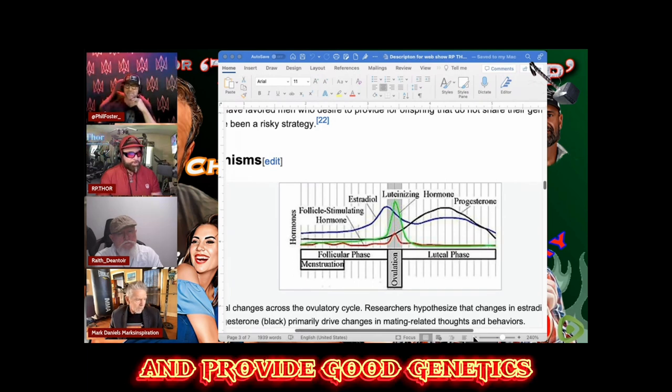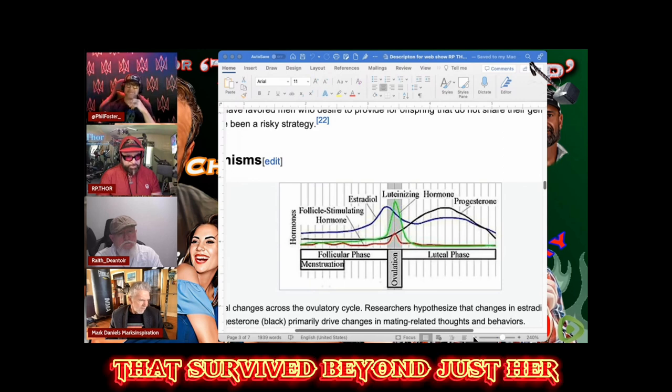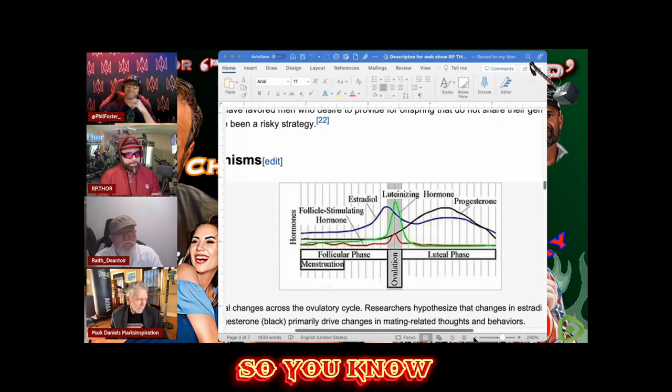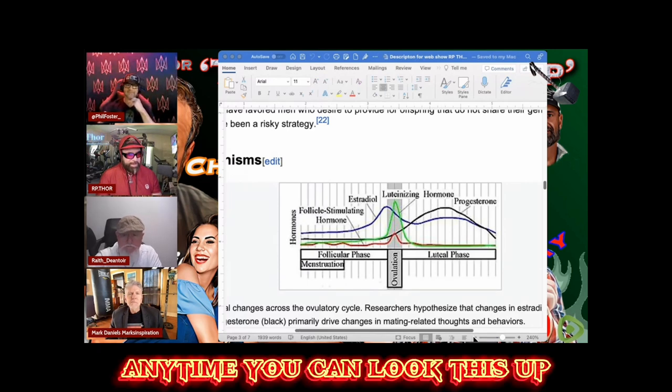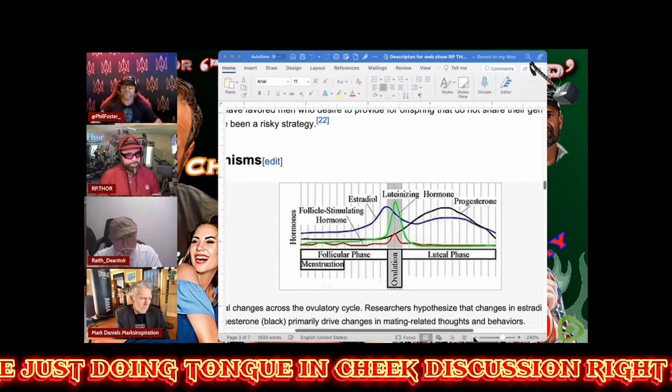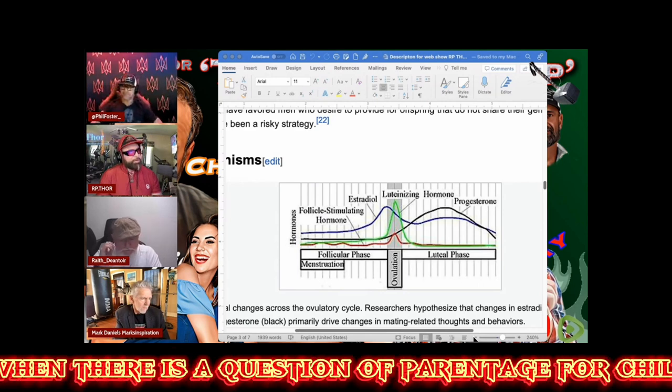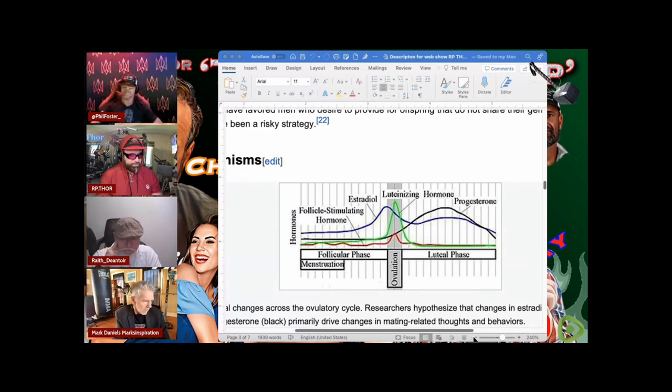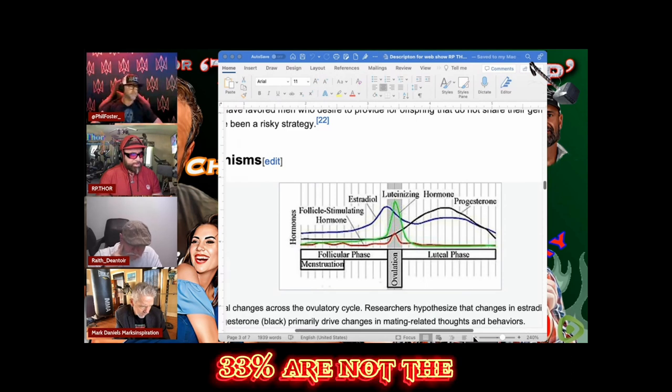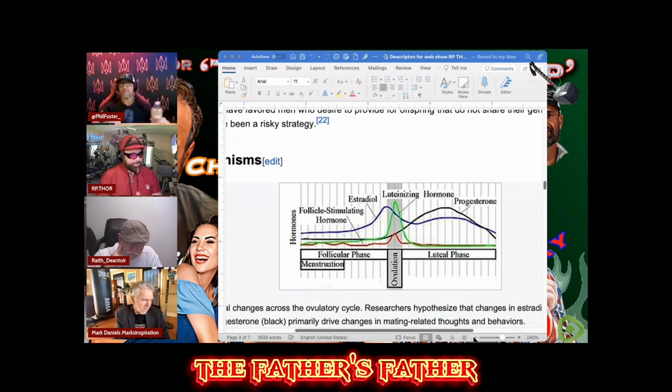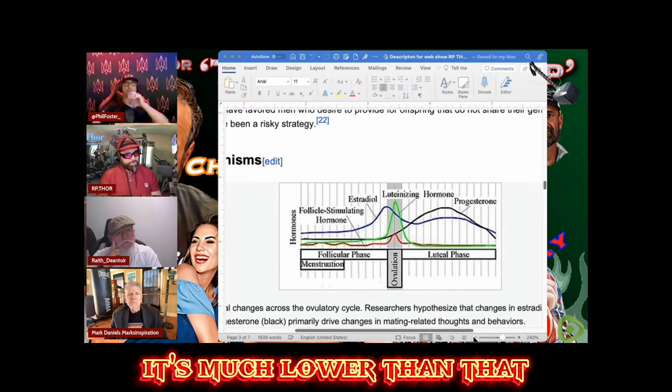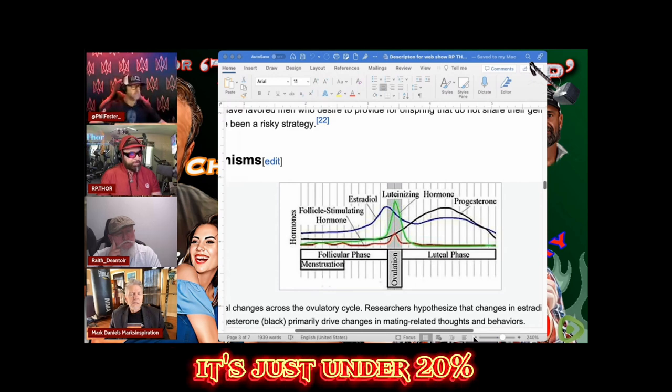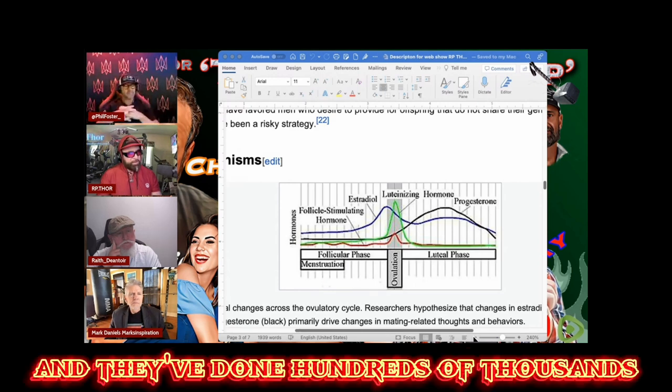There's evolutionary reasons for this: to perpetuate the species and provide good genetics that survive beyond just her. Realizing this, when it gets back to parental testing today, anytime there is a question of parentage for children, 33% are not the father when in question. When it's not a question, it's much lower but still there, just under 20%. They've done hundreds of thousands of parental DNA tests.